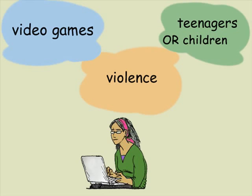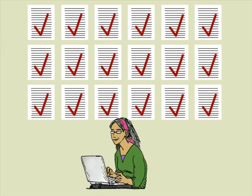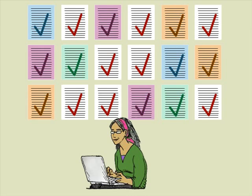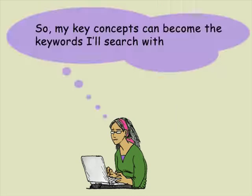The next step is to think of synonyms and/or related terms for your key concepts. In the thousands of relevant articles that may be out there, they may not all discuss the topic using the same vocabulary. By creating a list of synonyms or related terms, you are also creating a list of keywords you can use to find the relevant articles in a database.